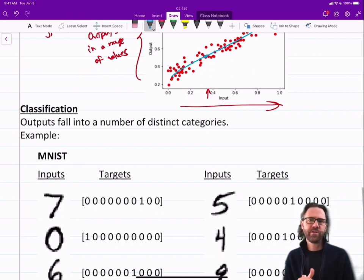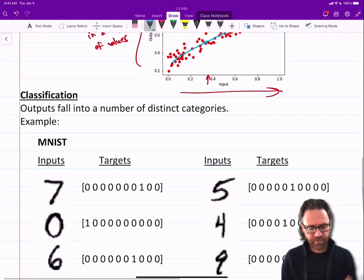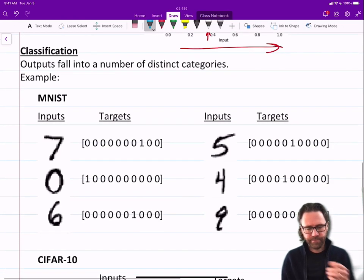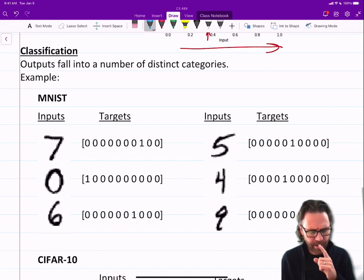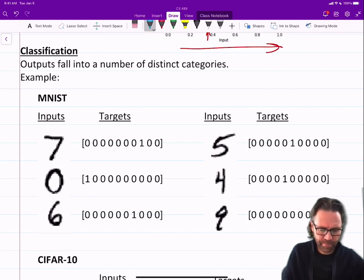In this case, the outputs fall into a number of distinct categories. So for example, this MNIST dataset—I'm not sure what MNIST stands for, you can Google it—it has a whole bunch of input images, but the output falls into distinct classes. So for example, this first one is a seven, so the output is a one-hot vector.